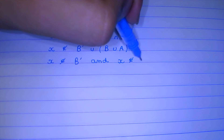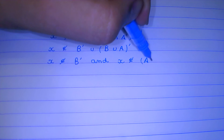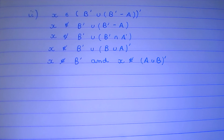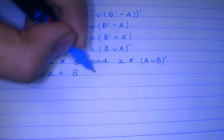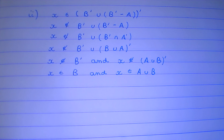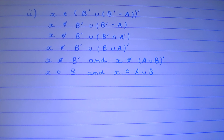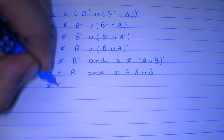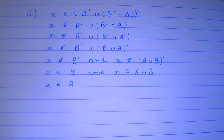And x does not belong to (A ∪ B)', which means that x belongs to B and x belongs to A ∪ B. Since x has to belong to B and also to A ∪ B — which is a bigger set than B — and since B is definitely a subset of A ∪ B, x belonging to B is sufficient. We have simplified this expression to B as well.